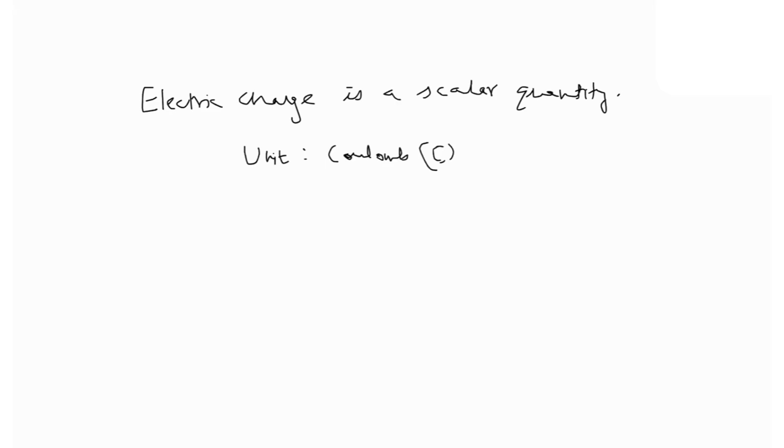Scientists have been able to calculate the charge on one electron. Charge on one electron is negative 1.6 into 10 to the power minus 19 Coulomb. Similarly, charge on one proton is plus 1.6 into 10 to the power minus 19. And charge on one neutron is zero Coulomb. You can memorize these values, but I guess they are usually provided in all the exams.